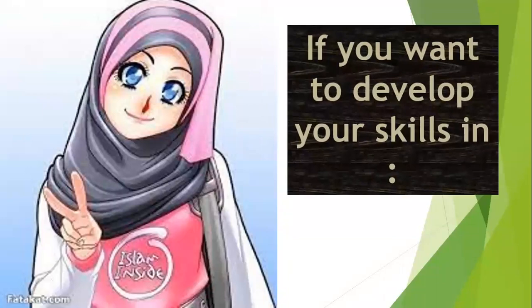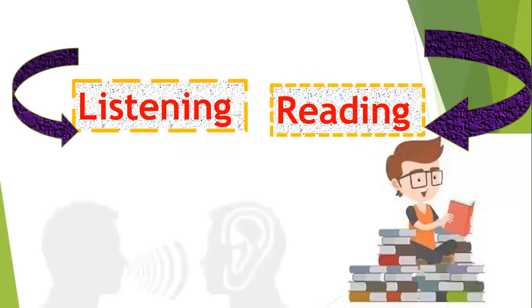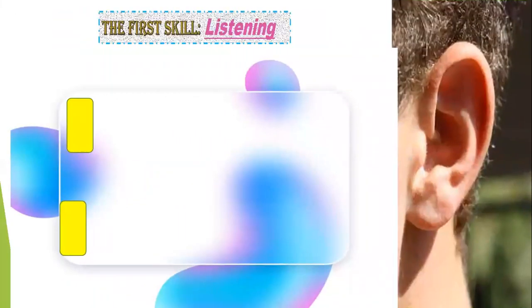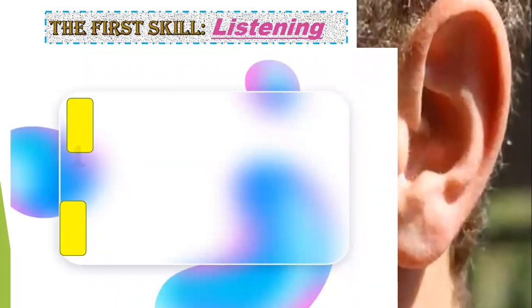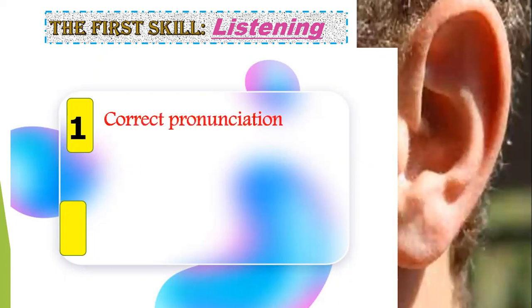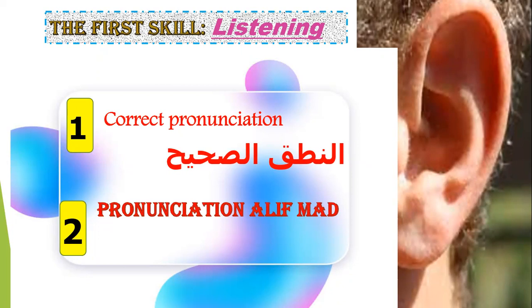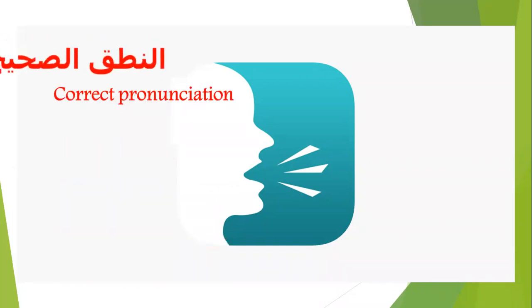If you want to develop your skills in reading and listening, watch the video to the end. Let's start with the first skill: listening. To develop this skill, we will start to get the correct pronunciation. Number two is about the renunciation of alif mad — not al-alif al-madiyah — let's start with the correct pronunciation.